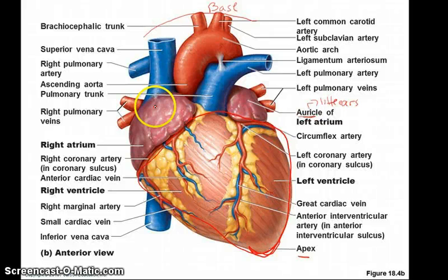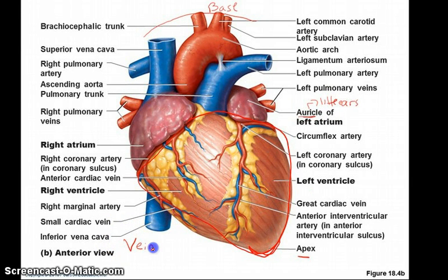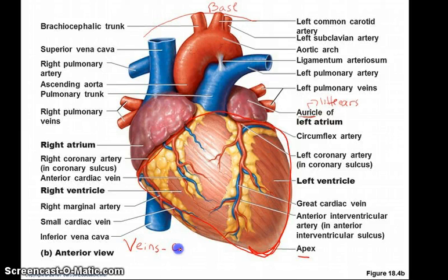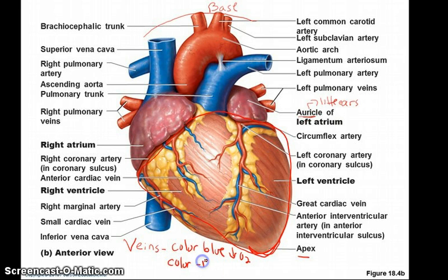You'll notice that veins are colored blue for the most part on models and in the cat. The veins aren't really blue inside a human. They're colored blue because they have low oxygen — blue means low oxygen content. If you see a red blood vessel, it indicates high oxygen content.